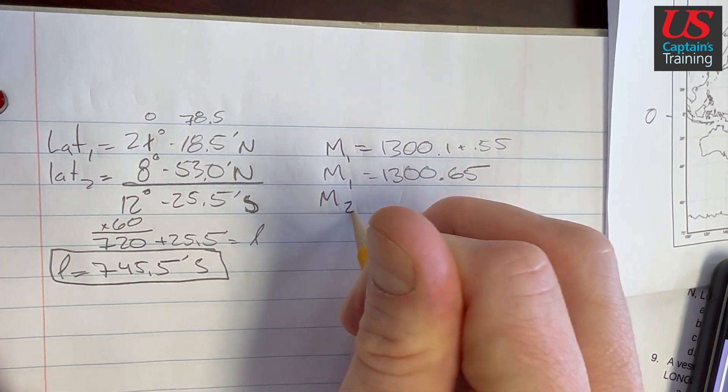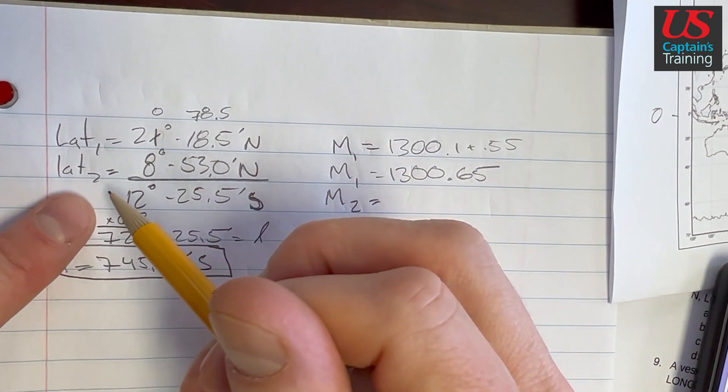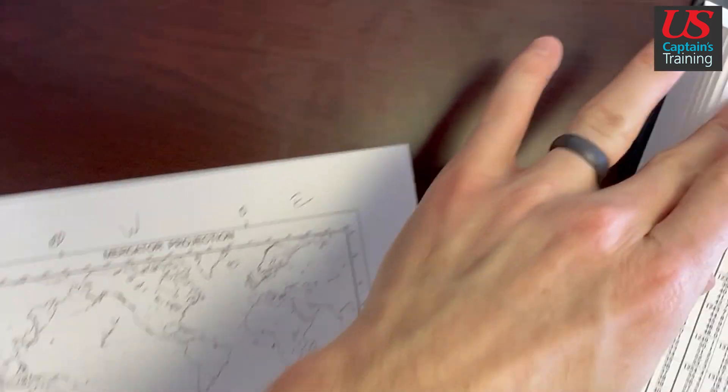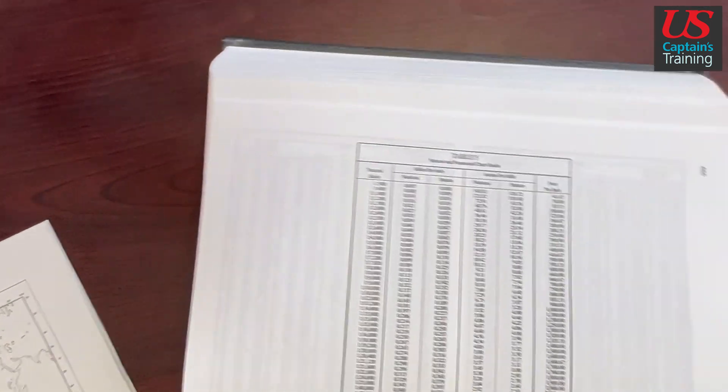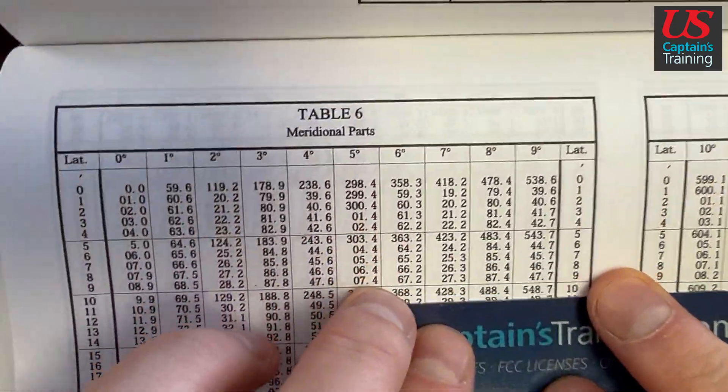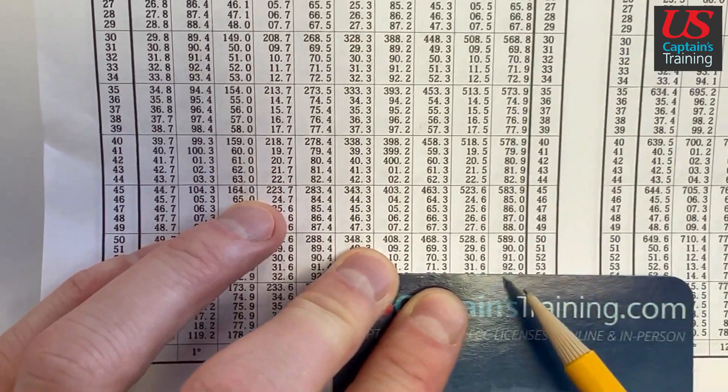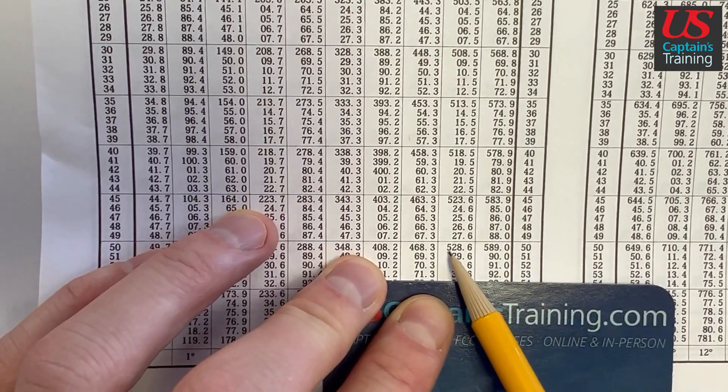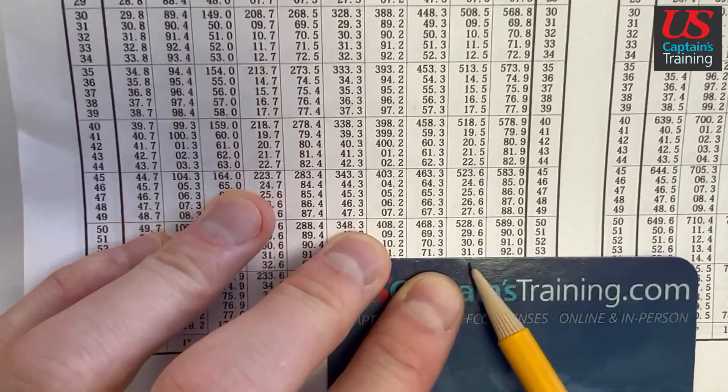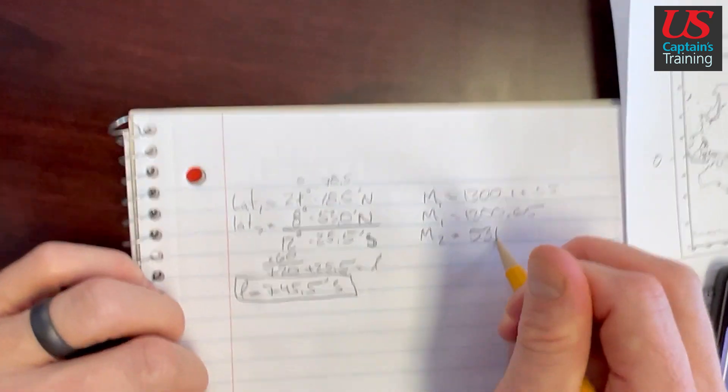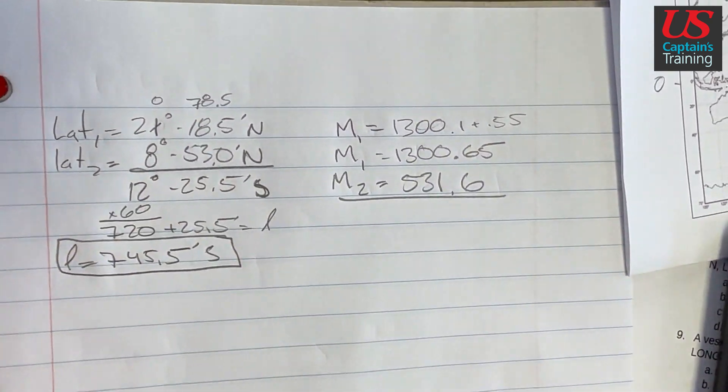And now we need to find M2, which is going to equal the meridional parts of this 8 degrees 53 minutes. So we need to find 8 degrees. Here's 8. 8.53, so we cruise down to 53 right here. And we get 531.6. So let's find the difference, and the difference between these is little M.